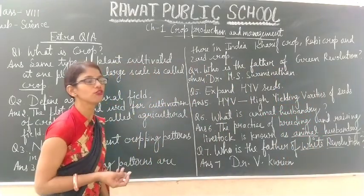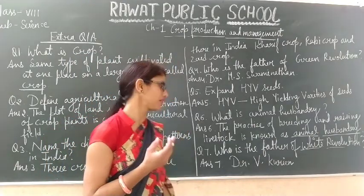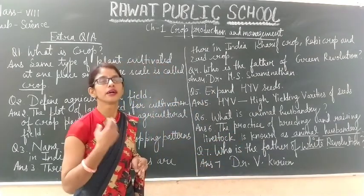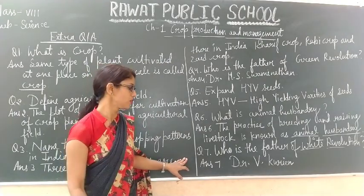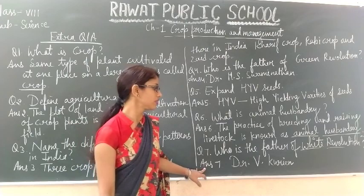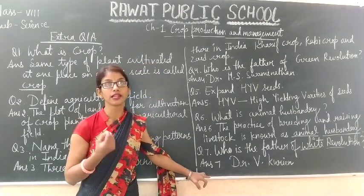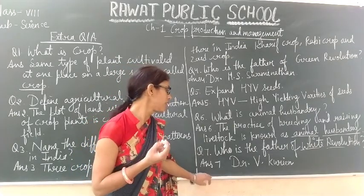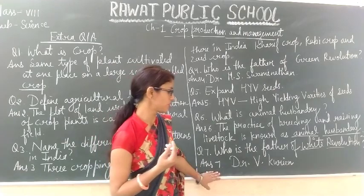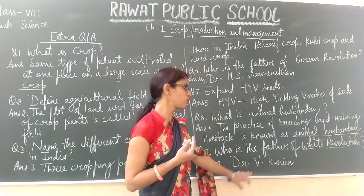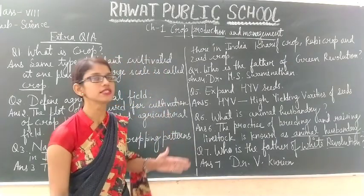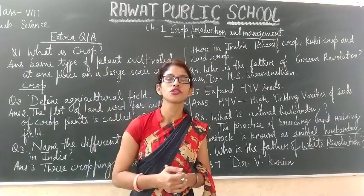Question seven: Who is the father of the White Revolution? Another term for the White Revolution is Operation Flood. Just as the Green Revolution increased crop production, the White Revolution increased milk production. It was developed by the National Dairy Development Board. The father of the White Revolution is Dr. V. Kurian, who is also known as the Milk Man. These are the extra question answers of Chapter 1 — you have to complete these.